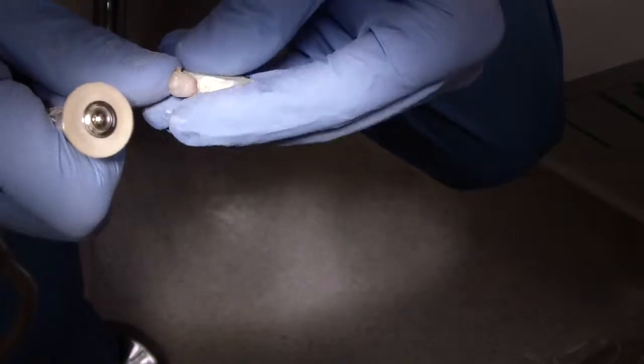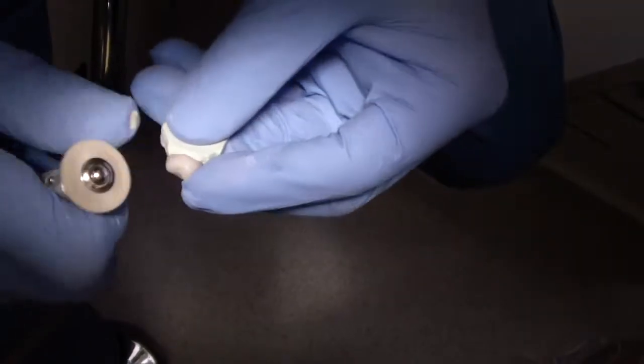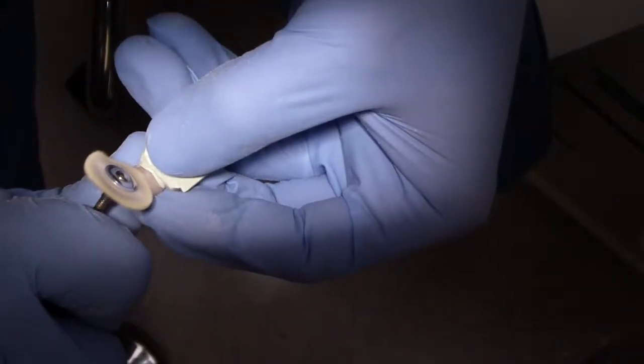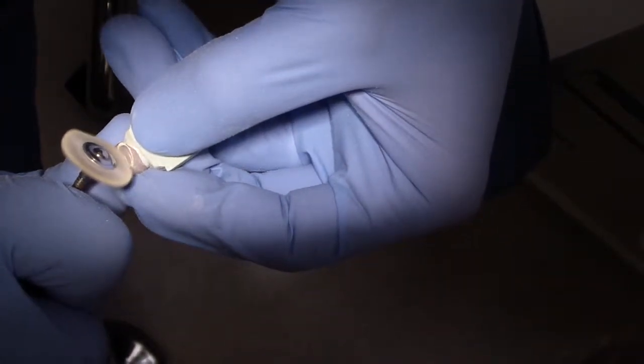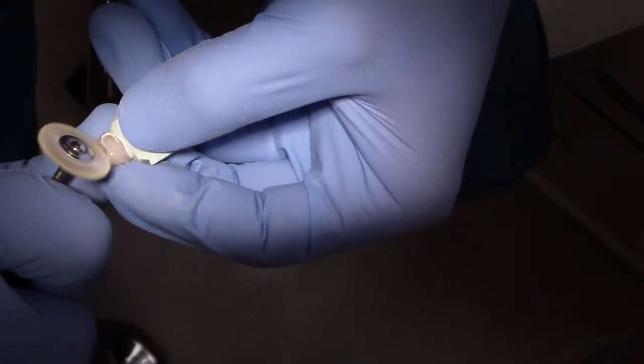The reason I'm using Empress in this situation is it's a pre-mold and we're happy with our occlusion. Once it's milled, you can just adjust it and polish it and not have to re-fire it.